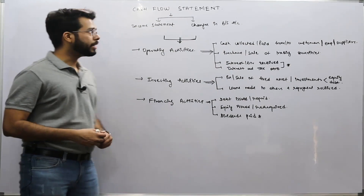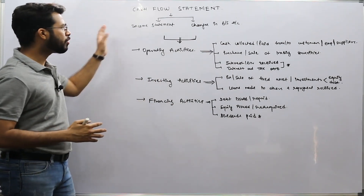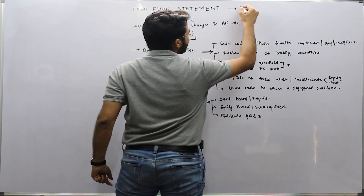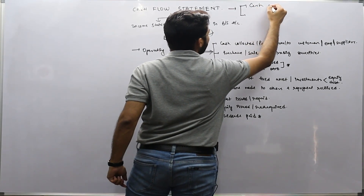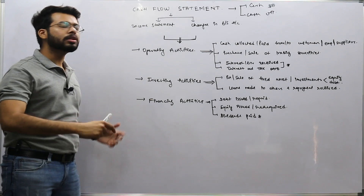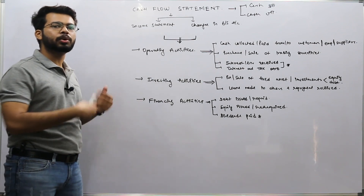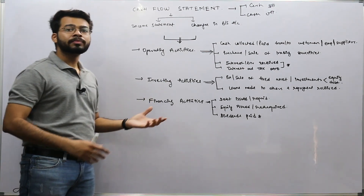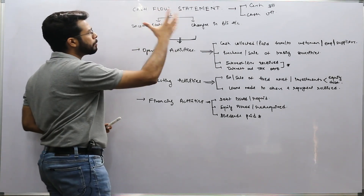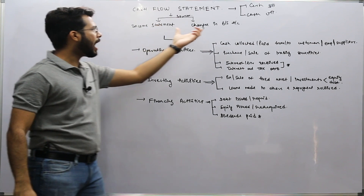Our next topic is the cash flow statement. We have already seen the income statement and balance sheet, and now we'll be moving forward with one of the most important statements — the cash flow statement. It basically tells you the company's position in terms of cash: where cash is coming from and where cash is being deployed. Cash flow comes from the income statement and changes in balance sheet accounts.